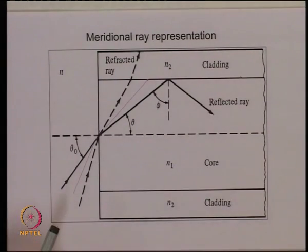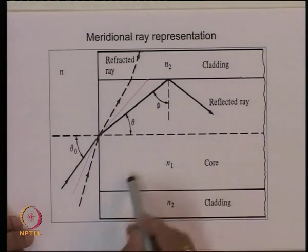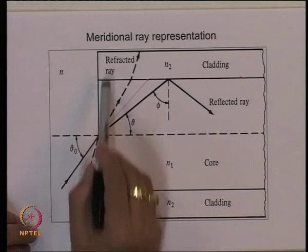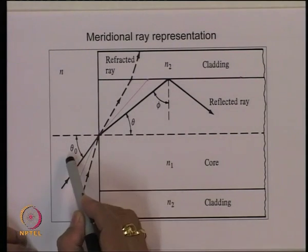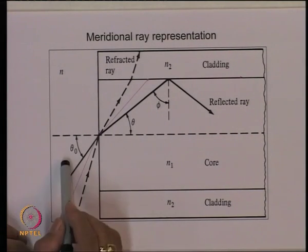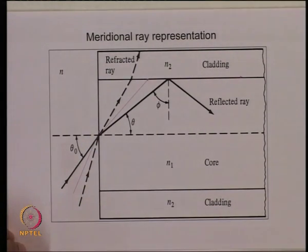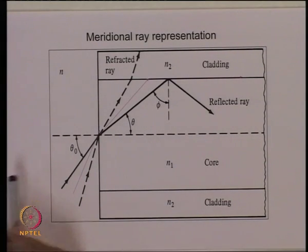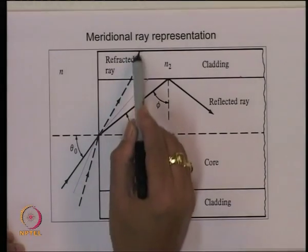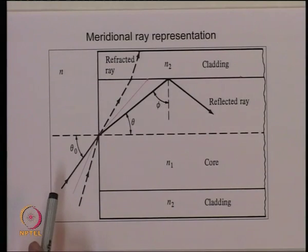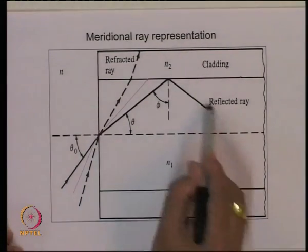Let us take a cross-section of the optical fiber. The core has refractive index n1, the surrounding cladding has refractive index n2, and a ray is launched at angle θ0 from air or a medium with refractive index n. This ray enters the core at angle θ, reaches the core-cladding interface, and depending on the value of θ0, either gets refracted into the cladding or gets totally internally reflected inside the core.